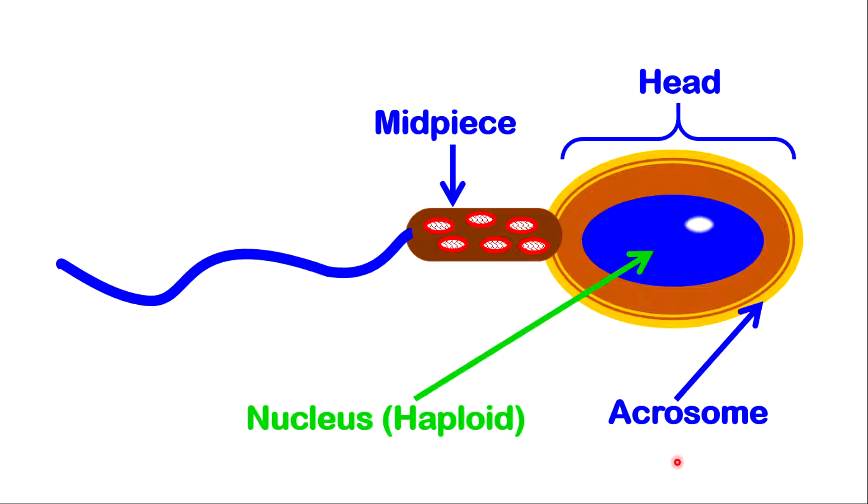There is a midpiece. The midpiece contains mitochondria. Mitochondria are responsible for the production of energy needed to aid in the swimming process. There is a tail. The tail is also called the flagellum. When it is propelled, it will bring about movement or swimming of the sperm.